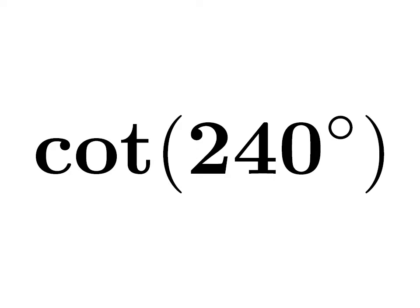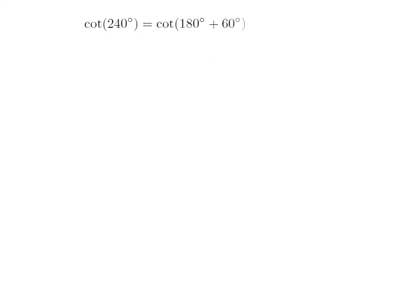In this video, we will learn to find the value of cotangent of 240 degrees. As 240 degrees is equal to 180 degrees plus 60 degrees, cotangent of 240 degrees is equal to cotangent of 180 degrees plus 60 degrees.